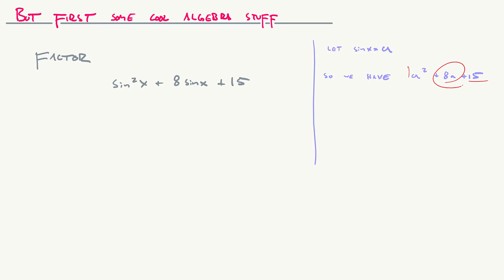There are two factors that multiply to give you 15 and add to give you 8 — it's 5 and 3. So you get (a + 5)(a + 3). You just have to remember that a is sin(x), so you have (sin x + 5)(sin x + 3).